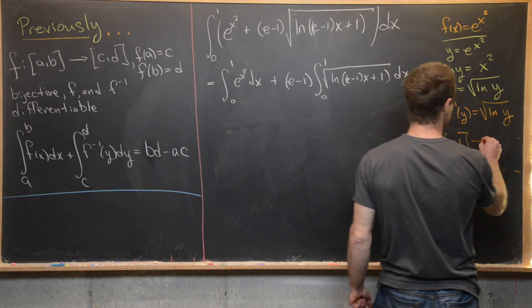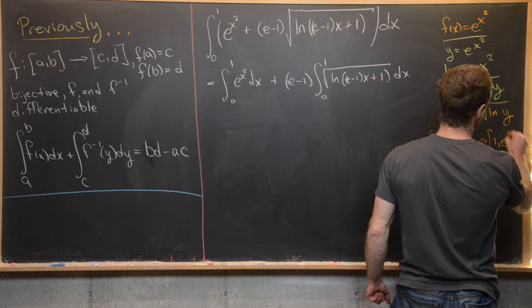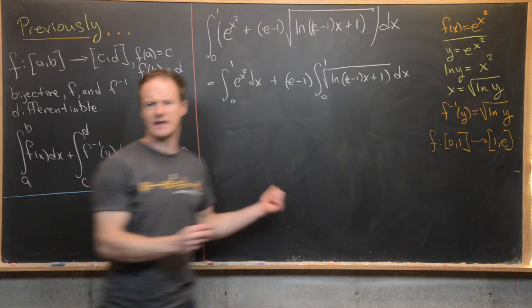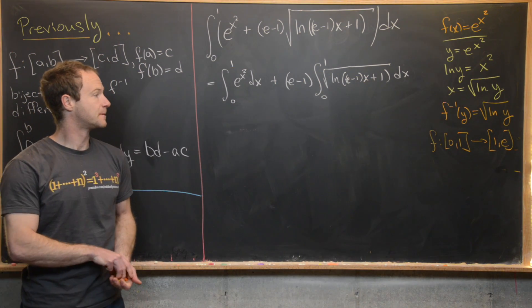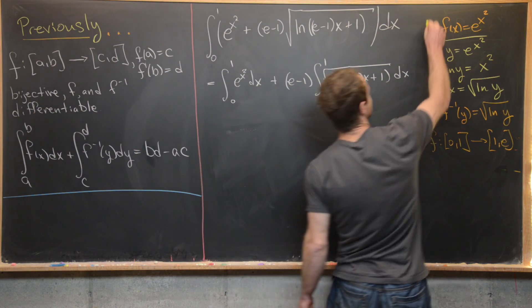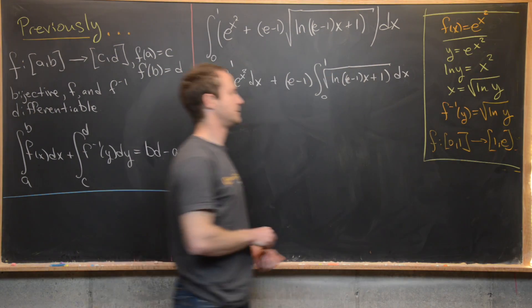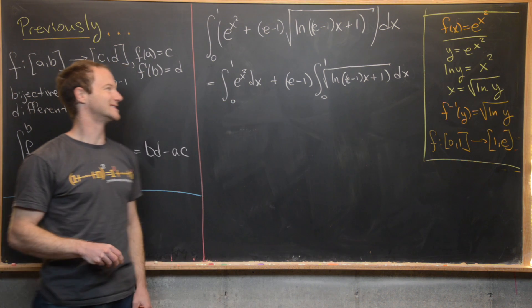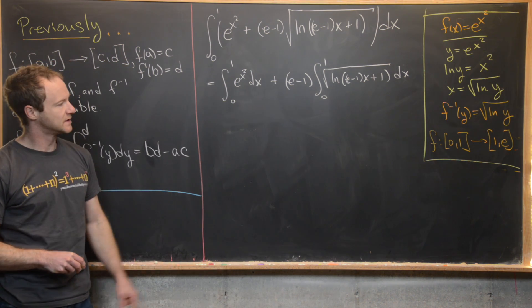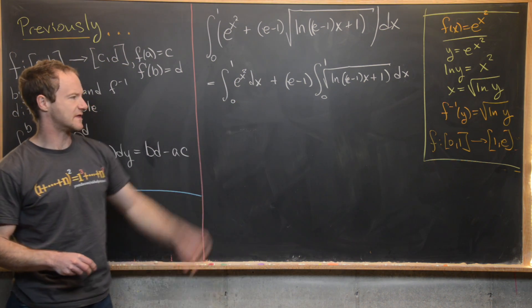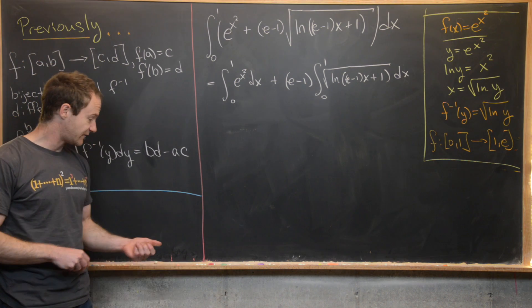to the interval [1, e]. Because e to the 0 is 1 and e to the 1 is obviously e. So we have to keep that in mind as well. So now looking at this setup, hopefully we can do something to this second integral so that it looks more like that over there. And in fact, we can.